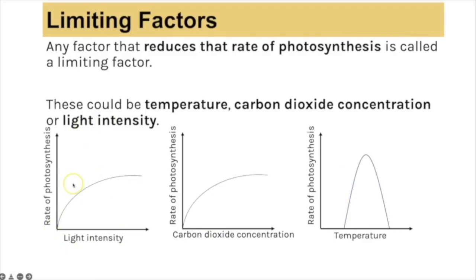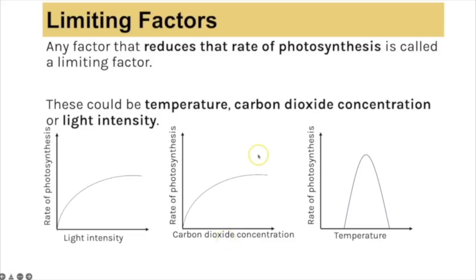On a graph, wherever you have a positive correlation, whatever is on the x-axis is currently limiting the rate of reaction. So up to a certain point, light intensity is limiting — as light intensity increases, the rate increases. But then it plateaus, meaning another factor is now limiting, either carbon dioxide concentration or temperature. The same concept applies to carbon dioxide concentration: as CO₂ increases and the rate increases, CO₂ is the limiting factor until it plateaus.